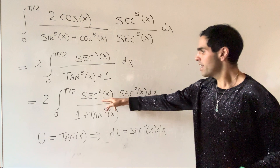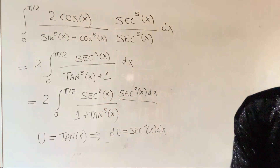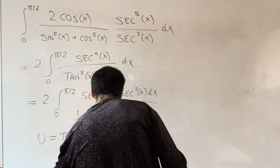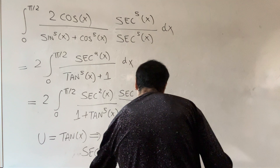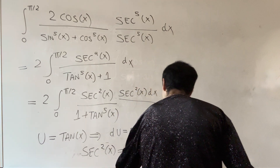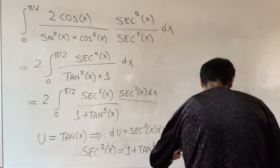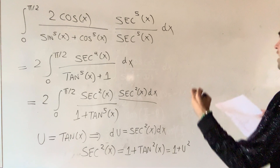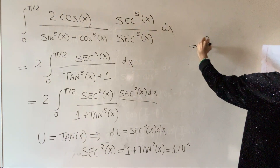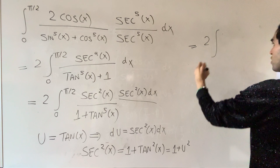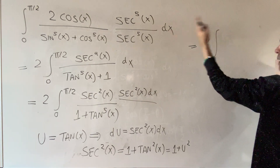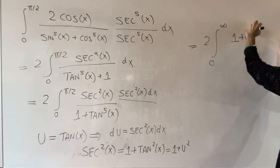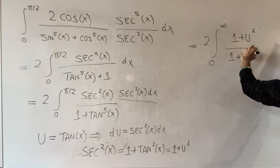That du takes care of one of the secant squared factors. For the other secant squared, recall that secant squared equals one plus tangent squared, which is one plus u squared. After the u-substitution, we get two times the integral from tangent of zero — so zero — to tangent of pi over two — so infinity — of one plus u squared over one plus u to the fifth, du.